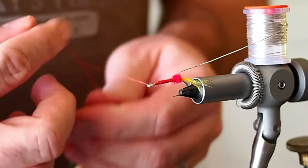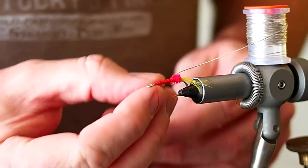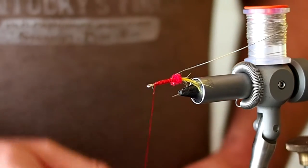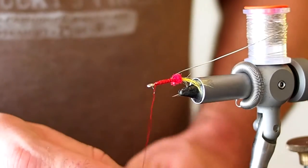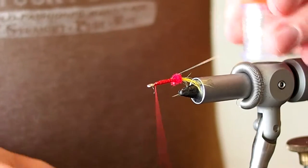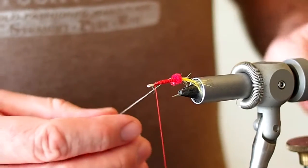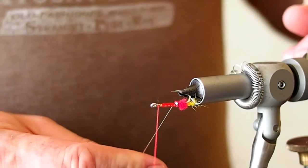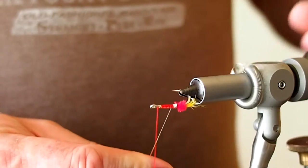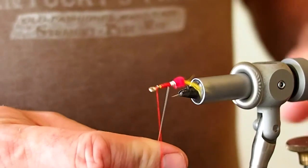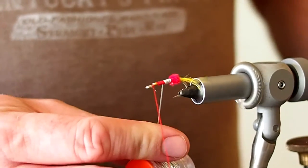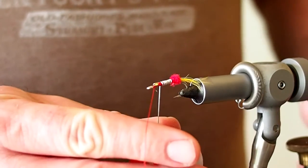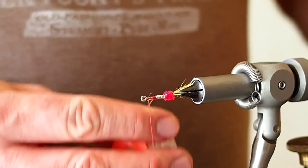I'm just going to give a couple of half hitches here. And I'm going to use the rotary feature of my vise to help me wrap that body.